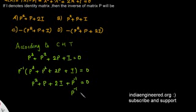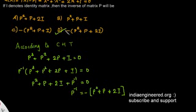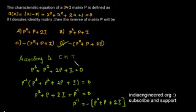P inverse will be minus of P square plus P plus 2I. Now from this it is clear that option D is the correct answer. The only thing we have done is that we have applied Cayley-Hamilton theorem.